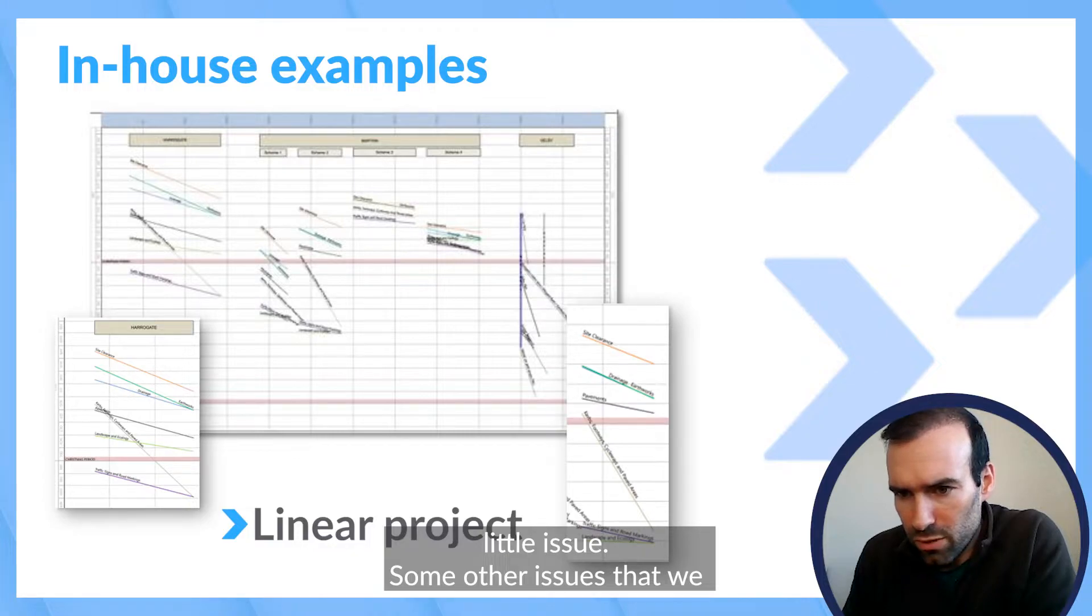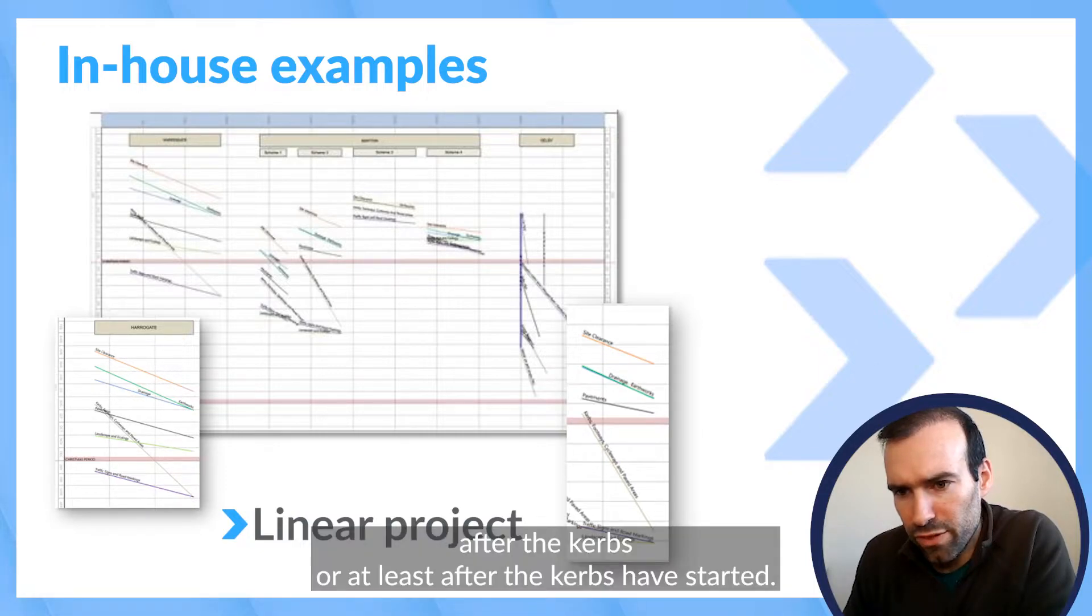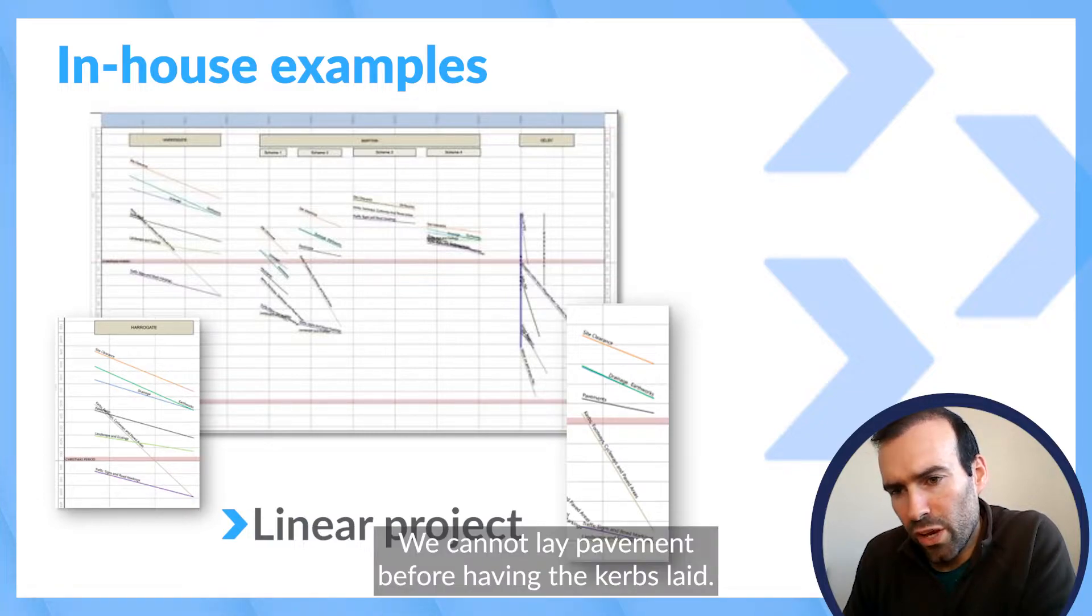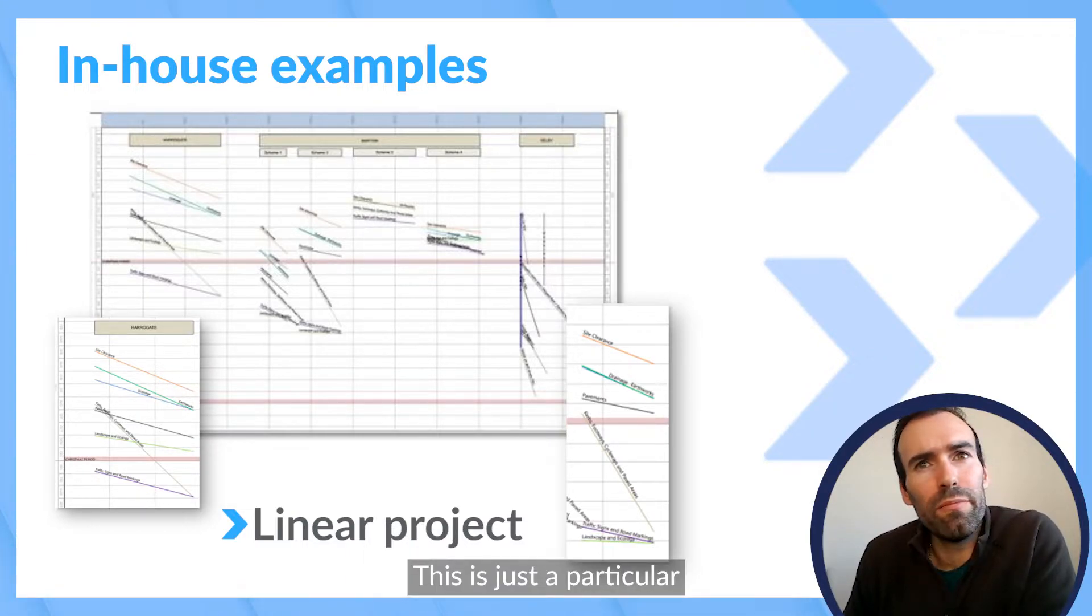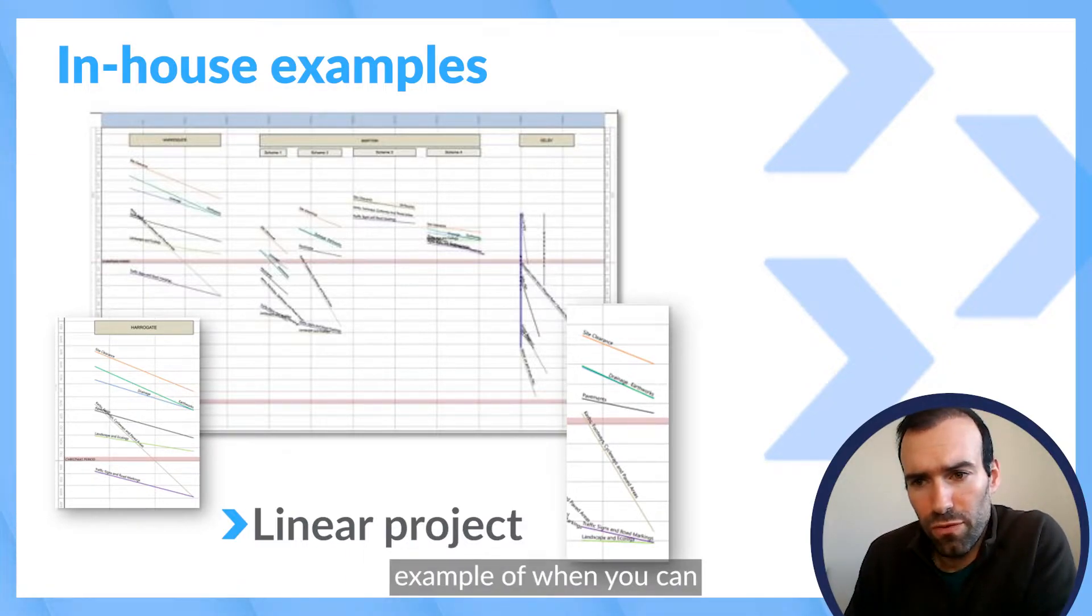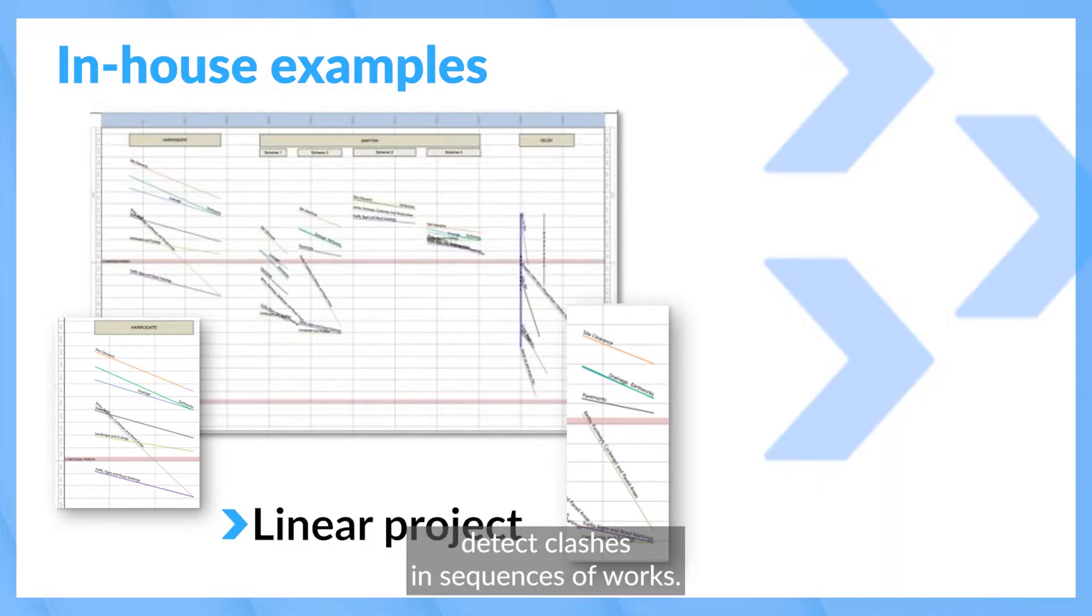Some other issues that we identified as well was that pavements have to start after the curbs, or at least after the curbs have started. We cannot lay pavement before having the curbs laid. This is just a particular example of when you can detect clashes and sequences of works.